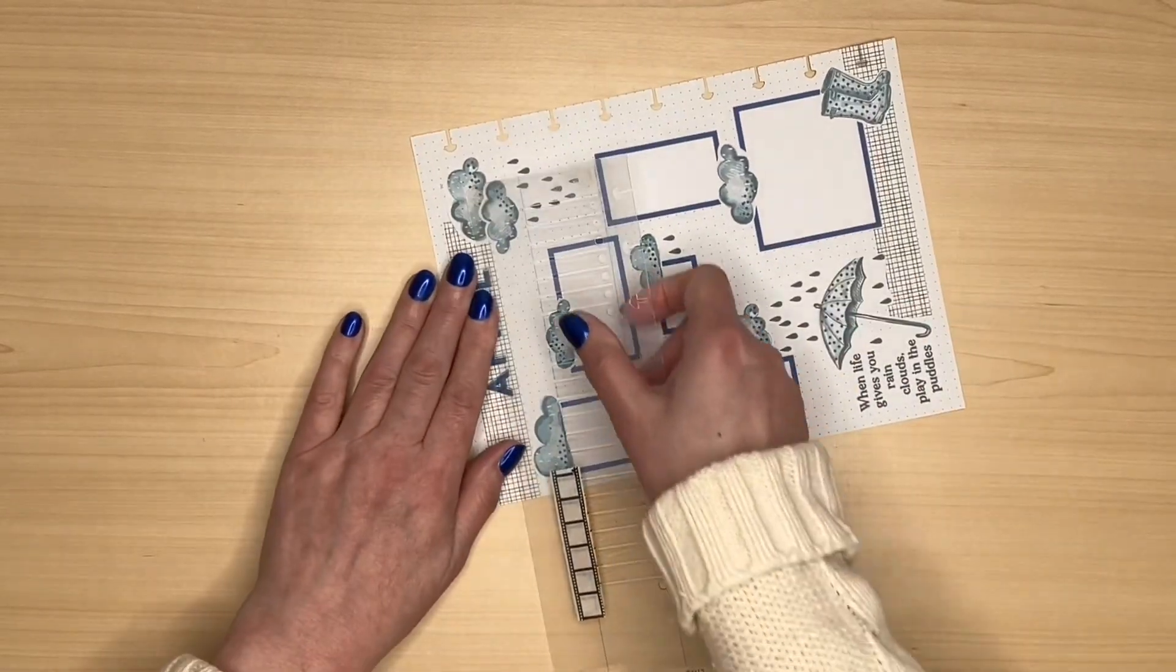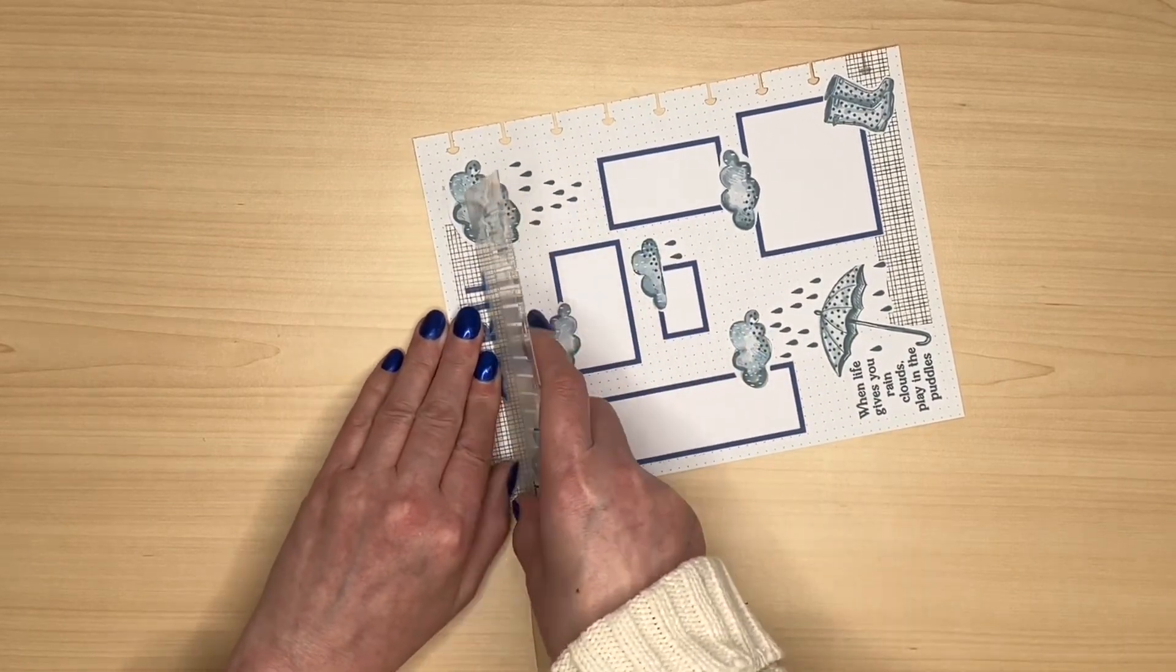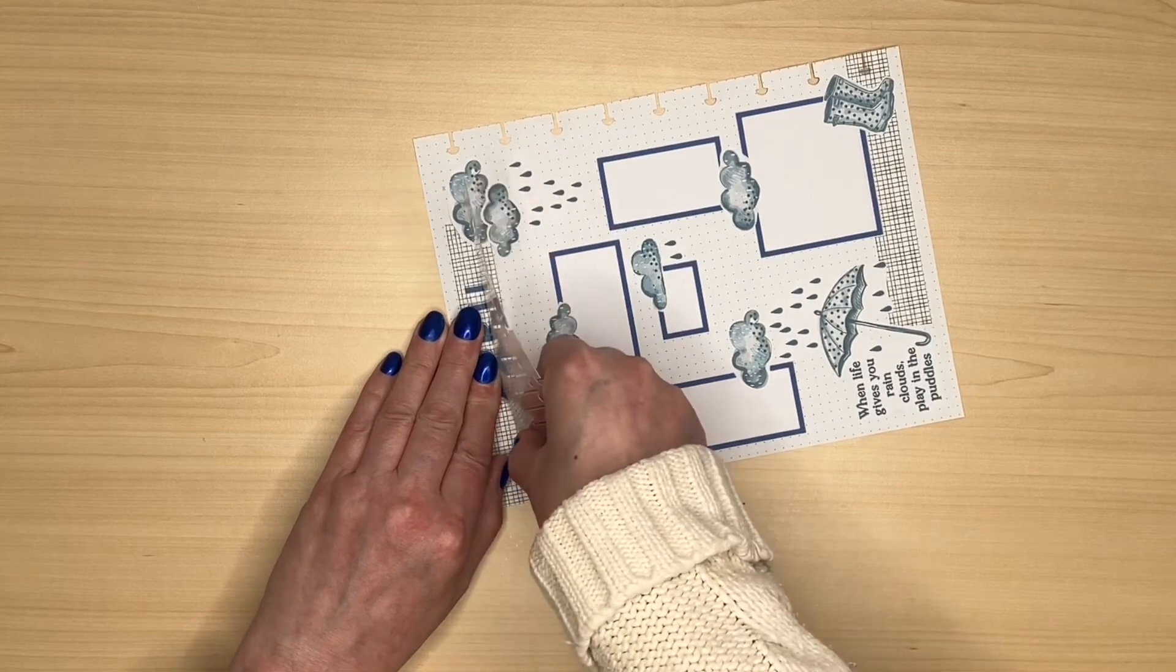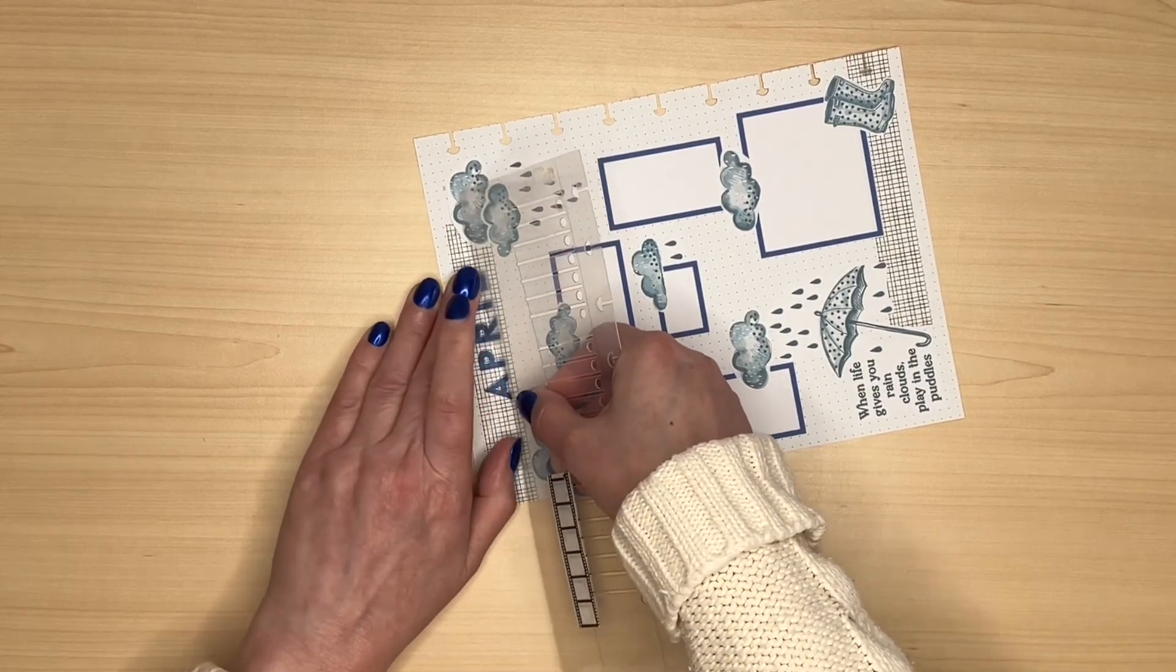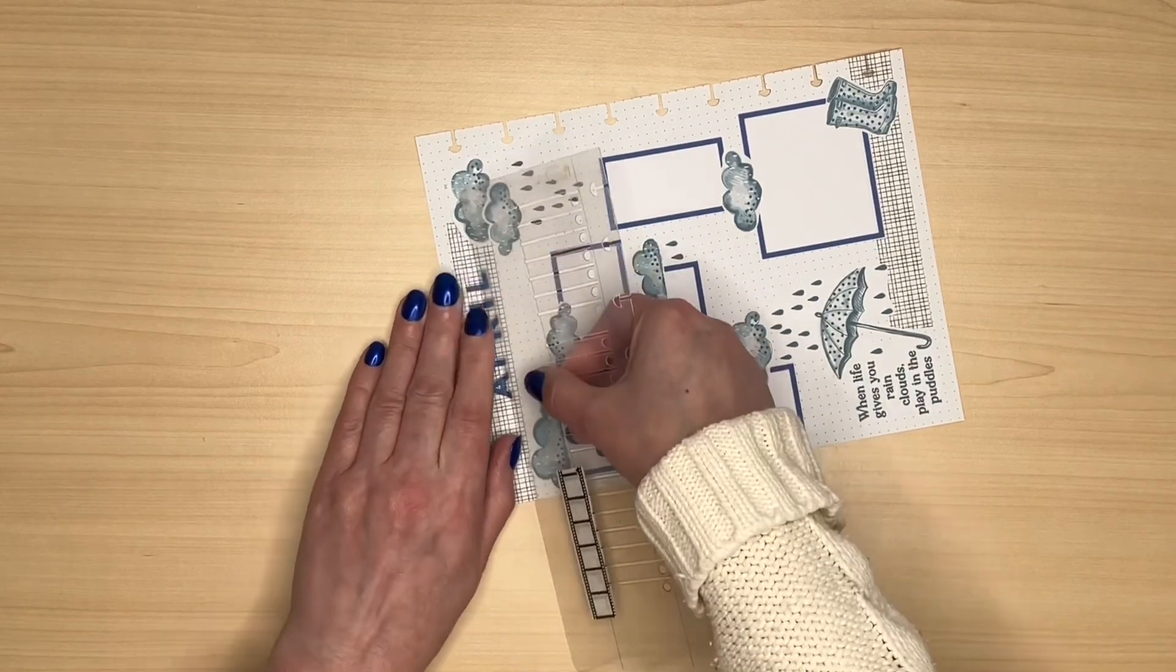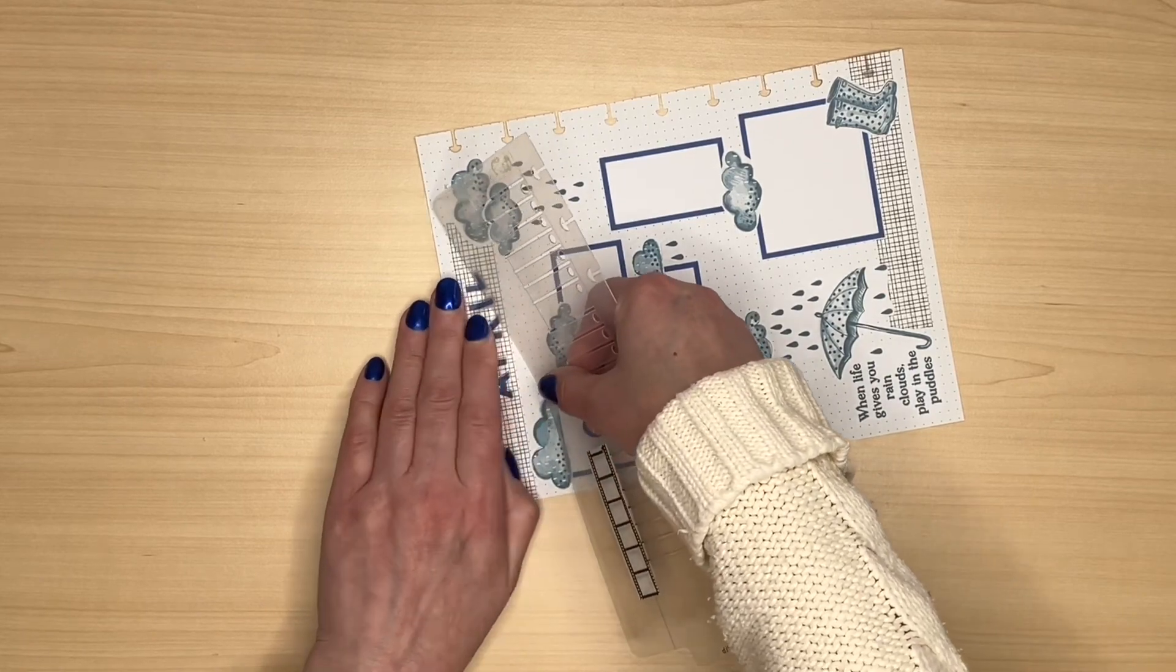The reason I write the sticker book title on the back of the sheet is a couple of reasons. One, in case I run out and I want to find out where I got it from and secondly if I'm using that sticker book say pastel tropics and I want to find the letters that match then I know where to find them.